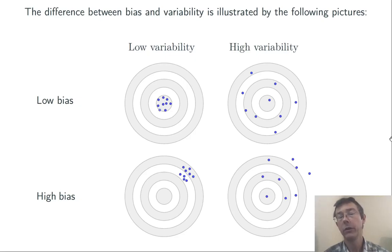Here's a good picture to keep in mind that illustrates the difference between bias and variability. I'm attempting to draw a bullseye here, and I'm imagining throwing darts at that bullseye. If my dart throws have low variability and low bias, then my results are going to be tightly clustered around the bullseye.